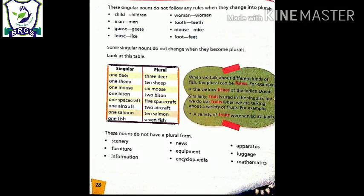There are some nouns which do not follow any kind of rule. For example: child, man, goose, louse, woman, tooth, mouse, foot. These are exceptional nouns which do not follow any kind of rules. Child becomes children, man becomes men, goose becomes geese, louse becomes lice. These are nouns which do not follow any rule when they are changed into plural. There are some nouns that do not change at all. Deer stays deer, fish stays fish, sheep stays sheep, aircraft stays aircraft, information stays information, equipment stays equipment. These are nouns which do not change at all.